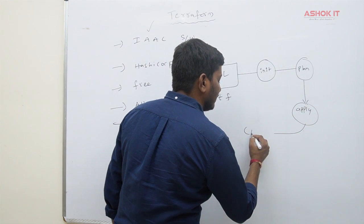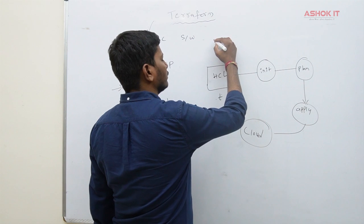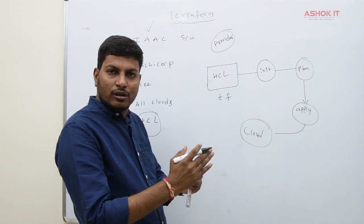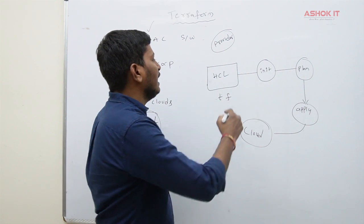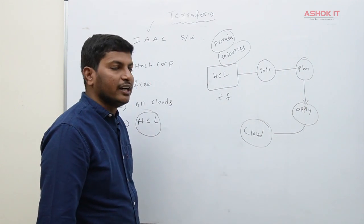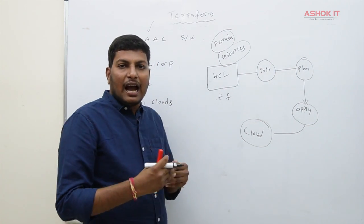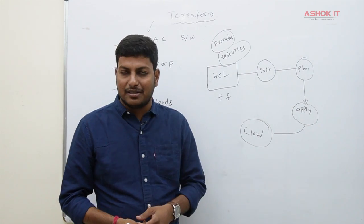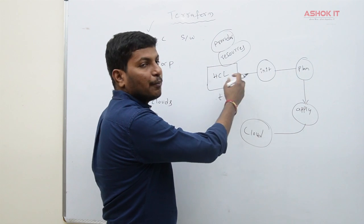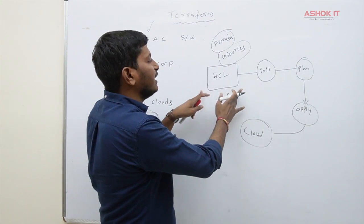Once the plan is created, we execute 'terraform apply', which creates the infrastructure in the cloud as configured in our Terraform script. In the script we configure two things: first, the provider — whether it is AWS, Azure, or GCP; and second, the resources we want to create, such as an EC2 machine, S3 bucket, VPC, or RDS database.